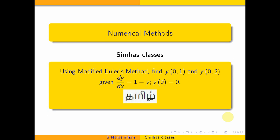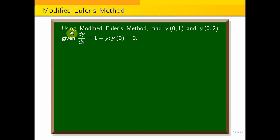Here's the question: Using modified Euler's method, find y of 0.1 and y of 0.2 given dy/dx equals 1 minus y, y of 0 equals 0. The initial condition is given. This is a direct formula substitution problem.